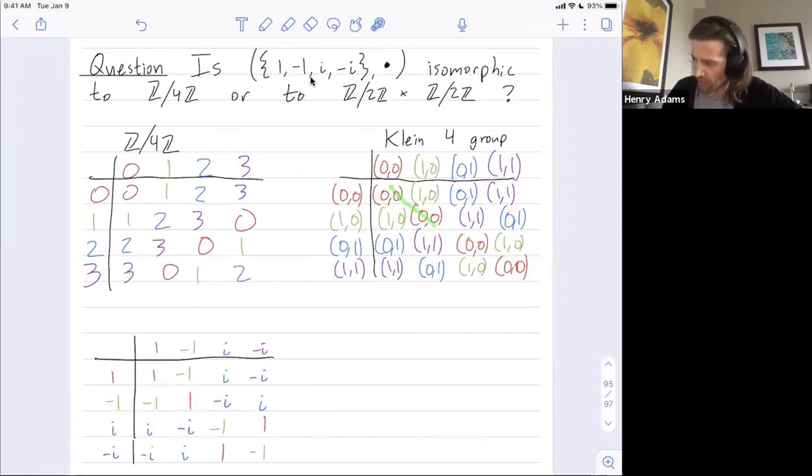So when you try to match up these elements so that the color is preserved, this box matches up, this box matches up, this box matches up. But this last box does not match up, because green and red have been flipped. See that? So we're not yet sure what group this is isomorphic to. It is isomorphic to one of them. I've just ordered my elements incorrectly or sort of colored my elements incorrectly.